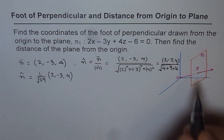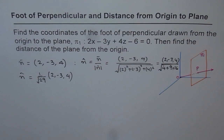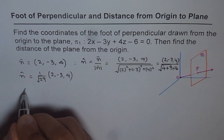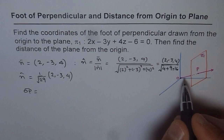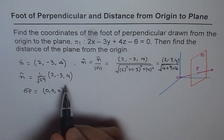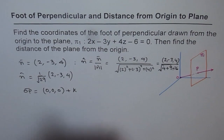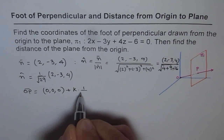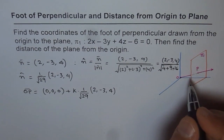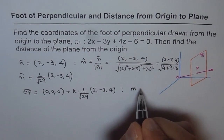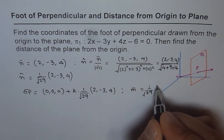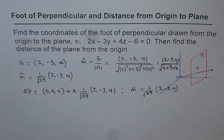Now we write the equation of line OP. Line OP passes through the origin (0, 0, 0) and has direction along the unit vector 1/√29 × (2, -3, 4). So the direction vector M for the line is 1/√29 × (2, -3, 4), which fully defines line OP.